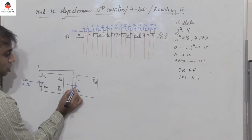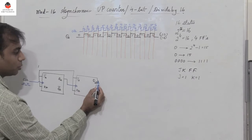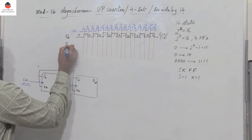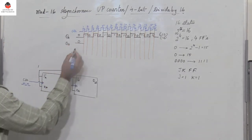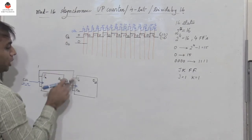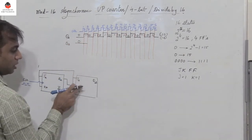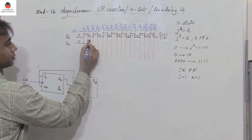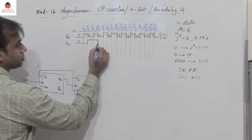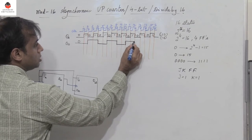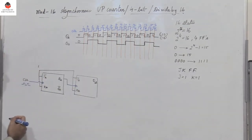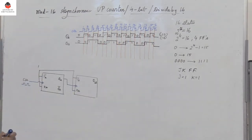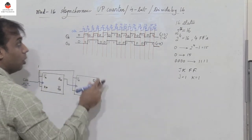During the negative edge of QA, the output QB toggles. Initially QB is reset to 0. It remains 0 until the first negative edge of QA arrives, then toggles from 0 to 1, then 1 to 0, and continues alternating: 0,0,1,1,0,0,1,1,0,0,1,1. This waveform is divided by 4 with respect to the clock input.